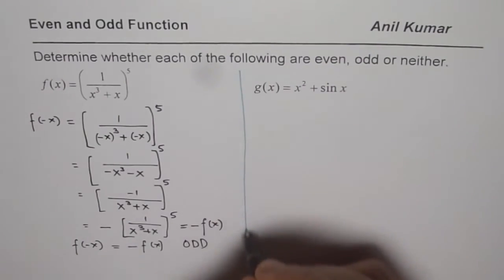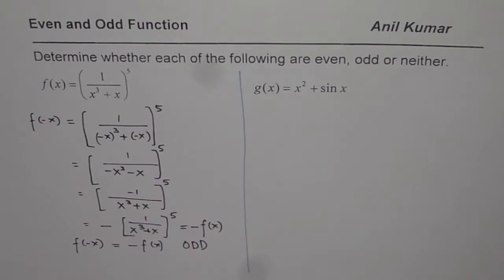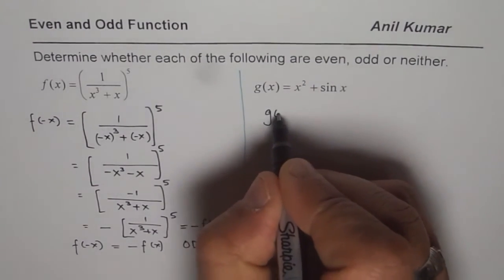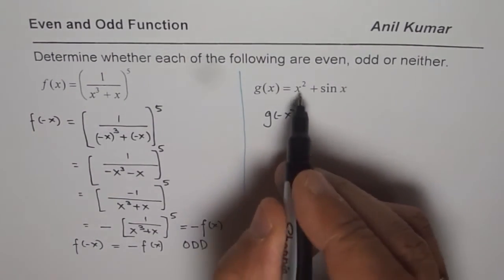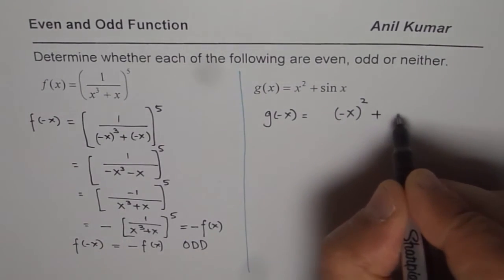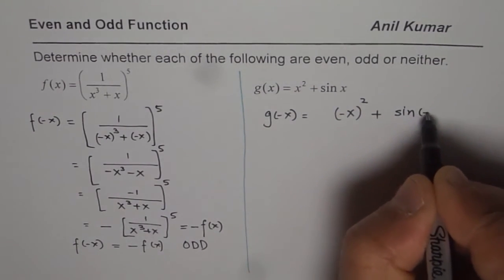Now, we will follow the same strategy and do the function g of x. So we are trying to find what is g of minus x. Replacing x with minus x, we get minus x whole square plus sin of minus x.